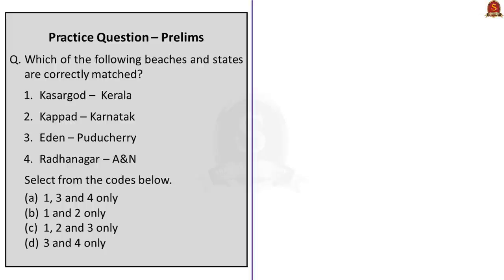First question: which of the following beaches and states are correctly matched? Eden is located in Puducherry and Radhanagar Beach is in Andaman and Nicobar — these are correct. The other two pairs are inversed: Kasarkod Beach is in Karnataka and Kappad Beach is in Kerala. All four beaches have earned the Blue Flag tag given by the Denmark-based non-profit Foundation for Environmental Education. The correct answer is option D — 3 and 4 only.